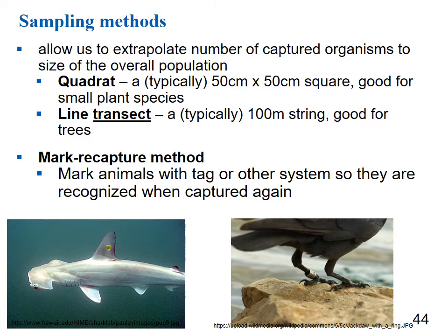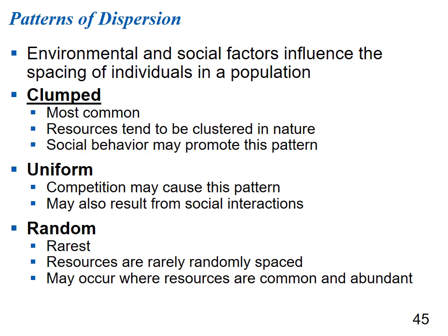The mark-recapture method involves marking animals with a tag or other system so they're recognized when captured again. The tag needs to be permanent and should not affect the organism too negatively. Environmental and social factors play a role in how organisms are distributed within the population.